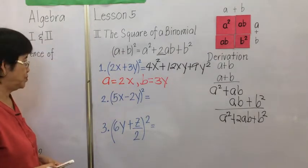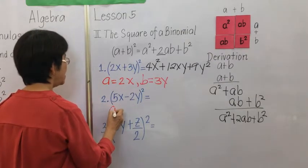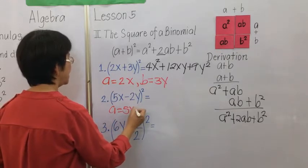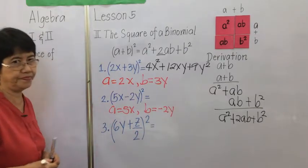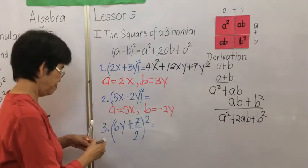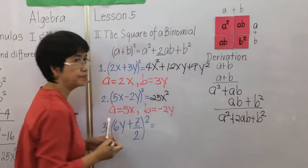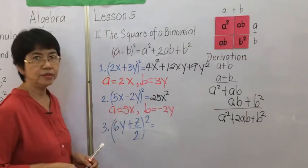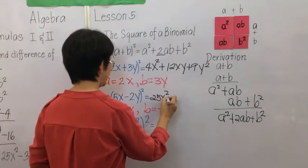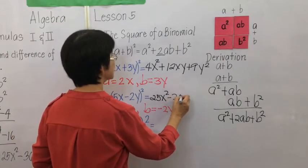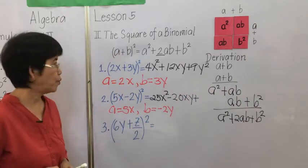Example 2: the quantity 5x minus 2y squared. Here a is equal to 5x and b is equal to negative 2y. We square the first term to get 25x squared. Then 2 times a times b gives 2 times 5x times negative 2y, which is negative 20xy. Plus the square of the last term gives 4y squared. So the answer is 25x squared minus 20xy plus 4y squared.